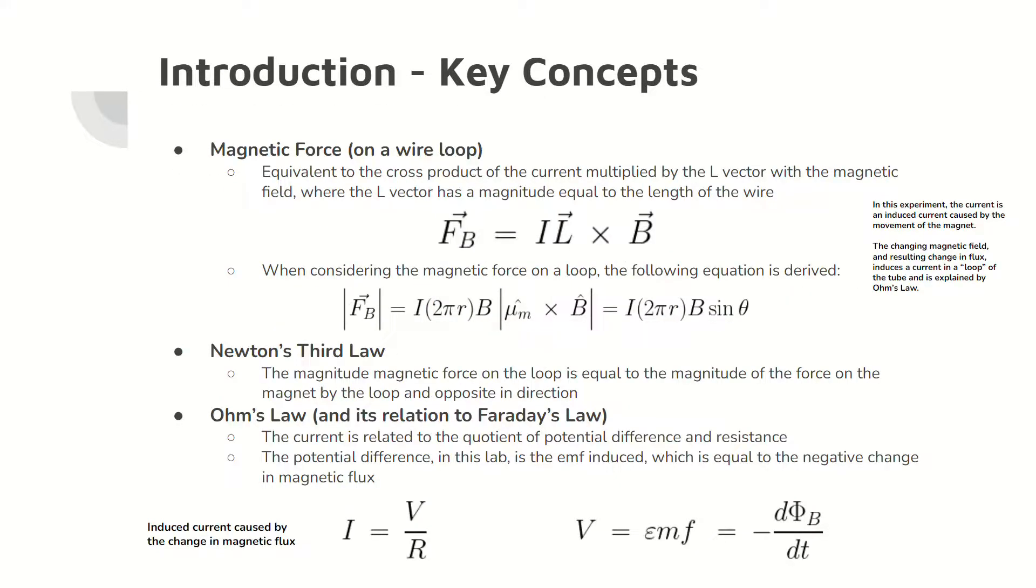The magnetic force is also a key concept in this lab. This force on the current carrying wire is equal to the cross product between the length of the wire and the magnetic field multiplied by the current. When considering the magnetic field on a wire loop, the magnitude of this force is shown in its general form by the second equation.